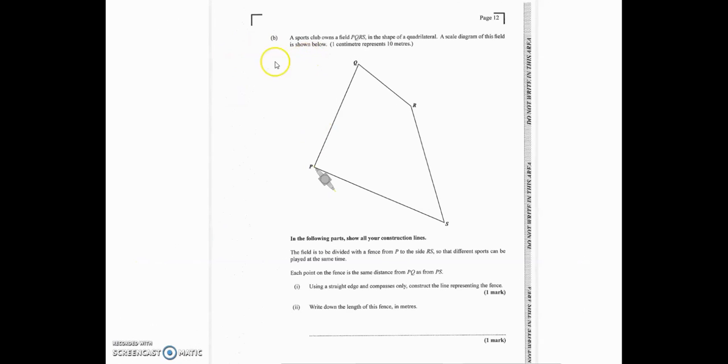All right, we're now going to be looking at question 3B of the past paper. And it says a sports club owns a field PQRS in the shape of a quadrilateral. A scale drawing of this field is shown below. One centimeter represents 10 meters. So what it's actually saying here is that for this sports ground, one centimeter on this diagram would actually represent 10 meters on the actual sports ground. All right, in the following parts, show all your construction lines. The field is to be divided with a fence from P to the side RS.